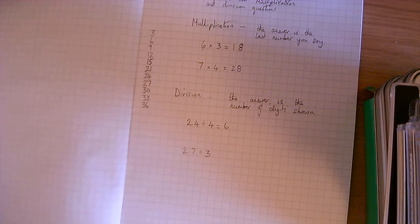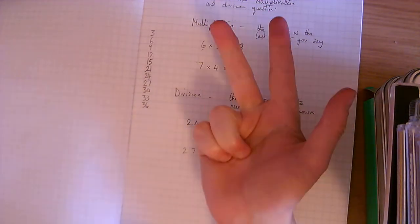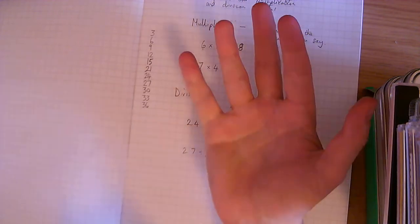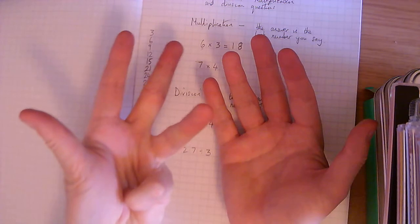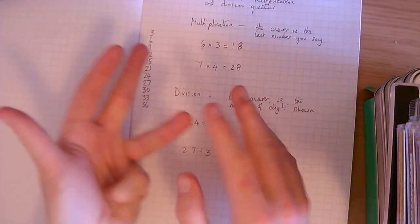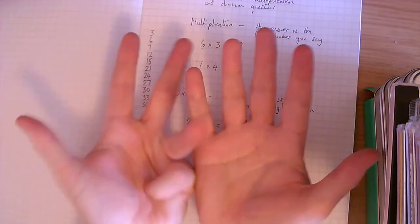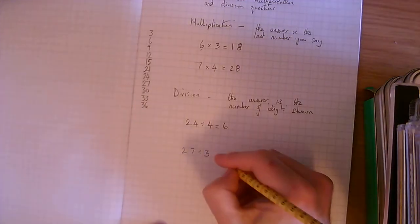27 divided by 3. Same method. 3, 6, 9, 12, 15, 18, 21, 24, 27. And I've got 1, 2, 3, 4, 5, 6, 7, 8, 9. So there's the answer, 9. So you write 9.